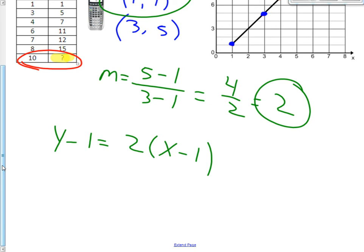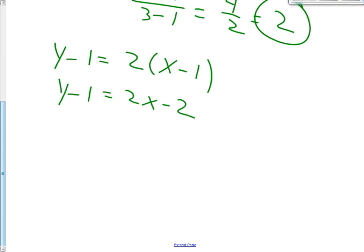So we have y minus the y-coordinate equals m times the quantity x minus the x-coordinate. Putting this into slope-intercept form, y minus 1 equals 2x minus 2. And so for slope-intercept form, we would get y equals 2x minus 1. And there we have it in slope-intercept form.